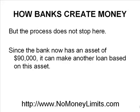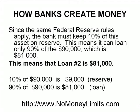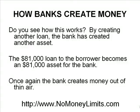But the process does not stop here. Since the bank now has an asset of $90,000, it can make another loan based on this asset. Since the same Federal Reserve rules apply, the bank must keep 10% of this asset on reserve. This means it can loan only 90% of the $90,000, which is $81,000. This means that loan number two is $81,000. Do you see how this works?